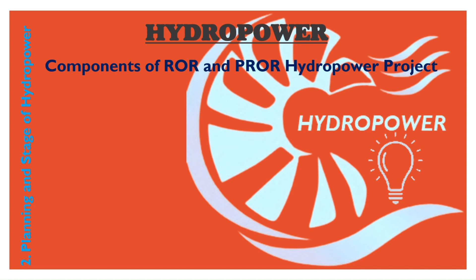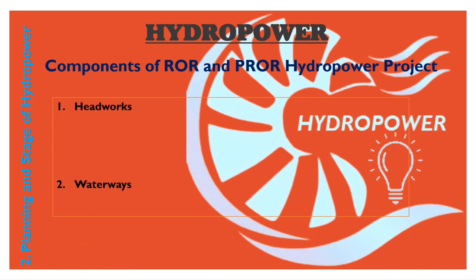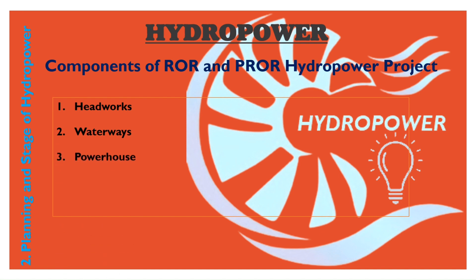First, let's list out the highlight areas of hydropower projects: one, head works; two, waterways; three, powerhouse; four, transmission line; five, protection works. Now let's list out the components of hydropower projects. The components are: diversion structure, flood wall, under sluice, intake, gravel trap, gravel flushing, approach canal, settling basin, sand flushing, forebay.